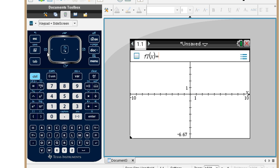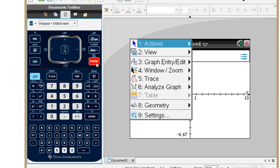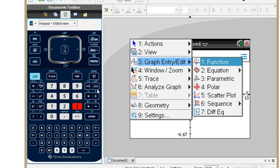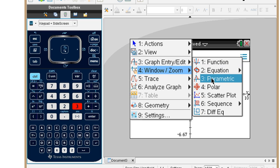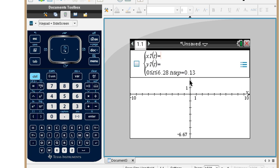This is a graph page. To graph a parametric equation, we go to menu, and then to 3, which is graph, entry, edit. And then within this submenu, 3, parametric. And here we have X of T equals, Y of T equals, and we need to enter each one of these equations in terms of T.